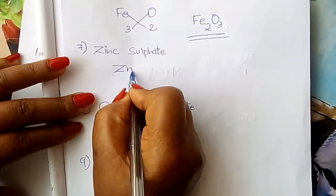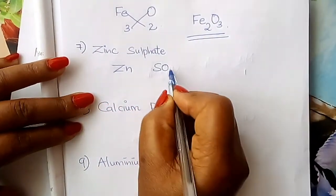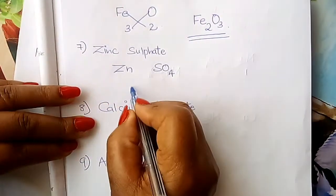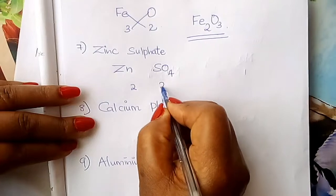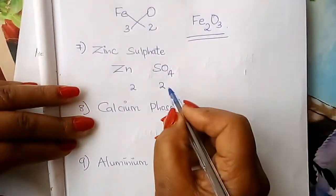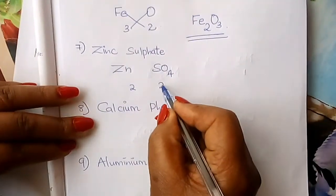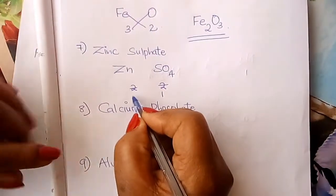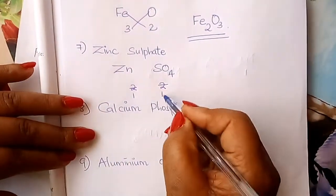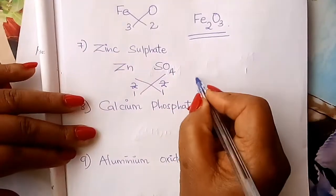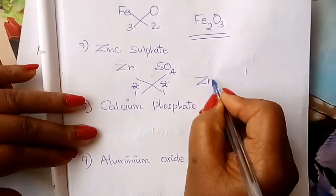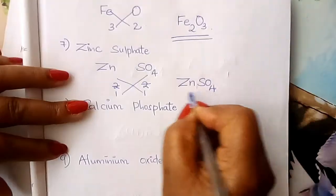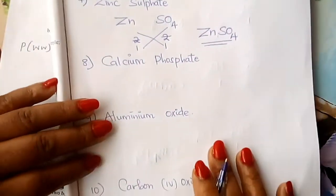Zinc sulfate: zinc is Zn; sulfate is SO4. Valency for zinc from the valency song is two; sulfate is also two. When both valencies are the same, reduce by dividing both by two — you get one and one. Interchange: zinc takes one, sulfate takes one. The formula for zinc sulfate is ZnSO4.